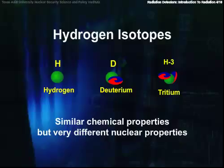Like all isotopes, their chemical properties are very similar because chemistry is largely governed by the bonds between the outer electrons. But their nuclear properties are often very different.